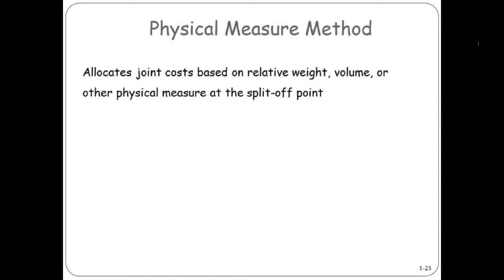Essentially, you're just looking at the weight of the products or the numbers produced, and dividing the cost based upon those numbers. This method only makes sense if the value at the end is approximately the same.